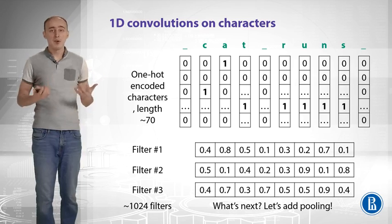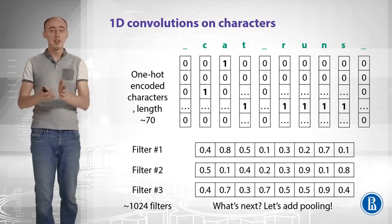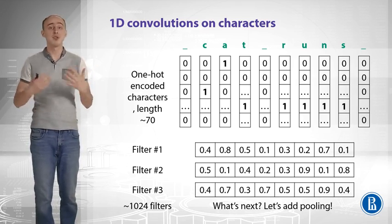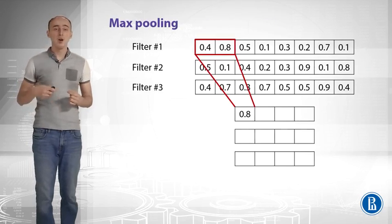If you remember how we do in convolutional networks, we usually add convolution followed by pooling, then again convolution and pooling and so forth. So, let's add pooling here.